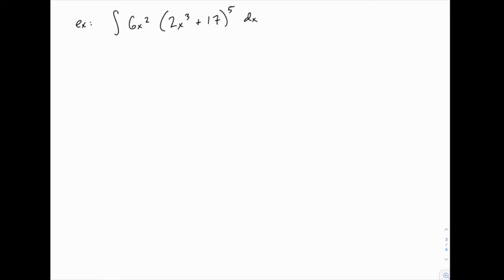In this example, we'll use u substitution again to integrate 6x² times the entire function 2x³ plus 17, all to the fifth power. After some of the ones we've done earlier, this one actually won't be very hard. It looks really complicated in this form, but you'll see that it simplifies quite nicely.